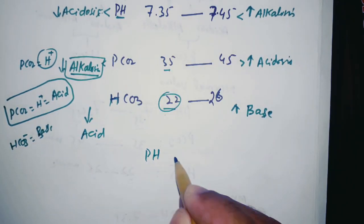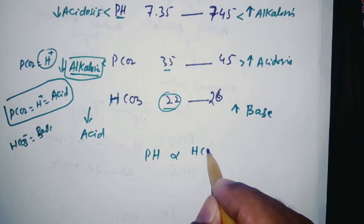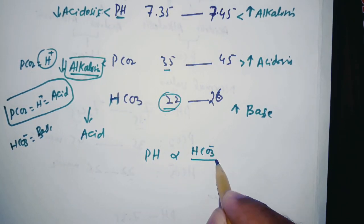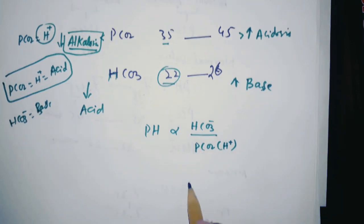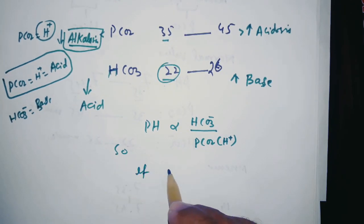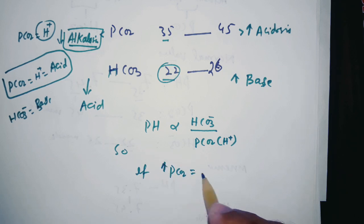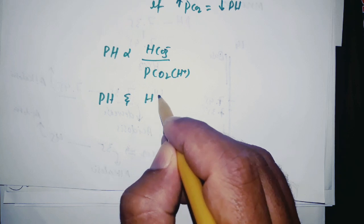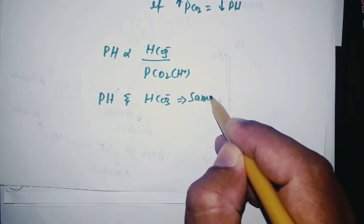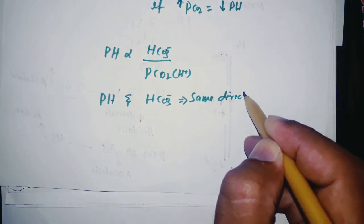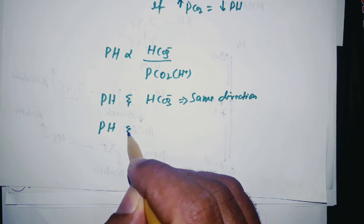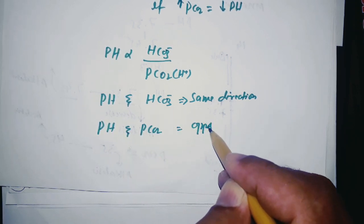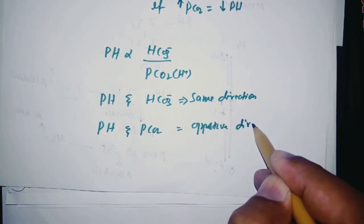pH is directly proportional to HCO3 and inversely proportional to PCO2. This means that if pH increases, PCO2 decreases — they go in opposite directions — and the cause is respiratory. pH and HCO3 go in the same direction, and the cause is metabolic.